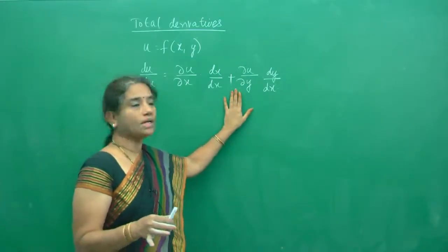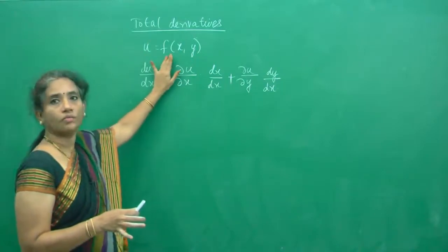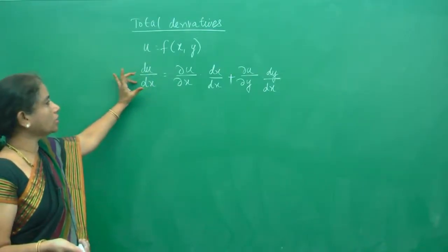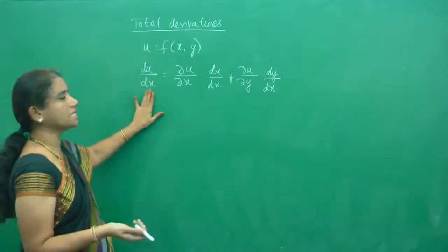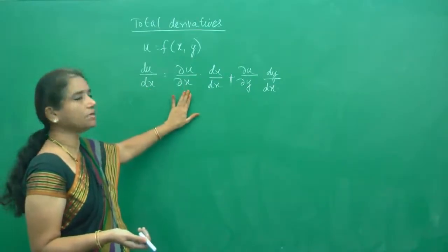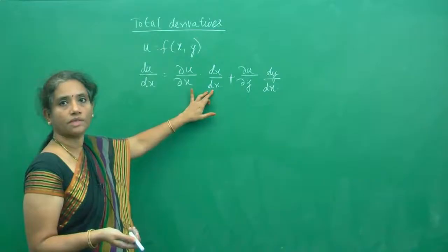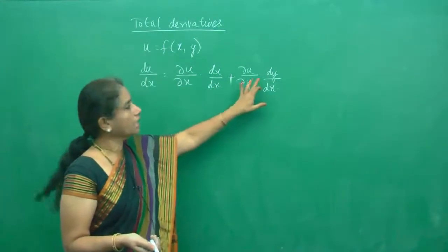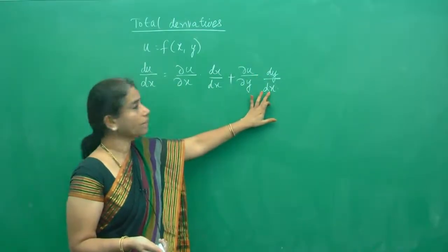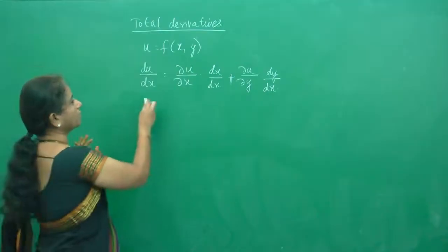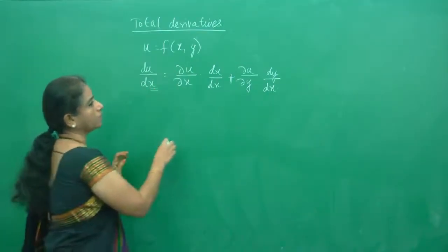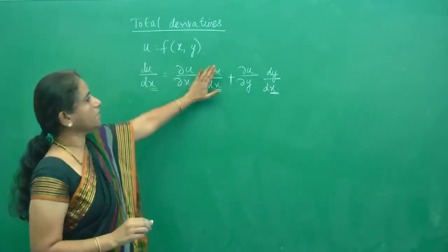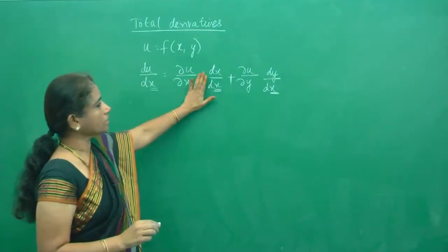When we are going to do the total derivative, let u be the function of x and y. The function can be any function of x and y. When you want to find the total derivative of u with respect to x, we partially differentiate it with respect to x and totally differentiate with respect to x. Same way, we differentiate partially with respect to y and totally with respect to x. In the total derivative, we get dx here, and dx by dx equals 1.